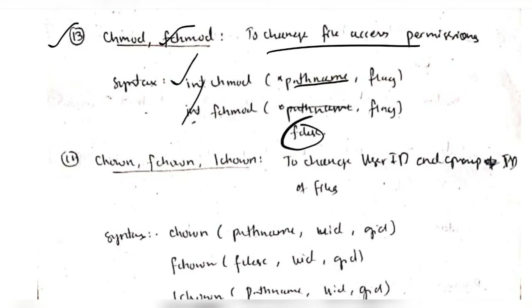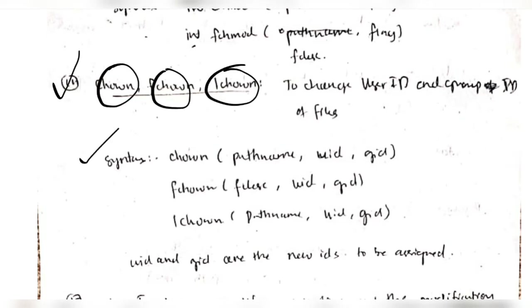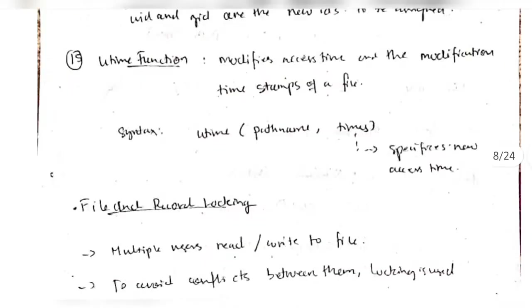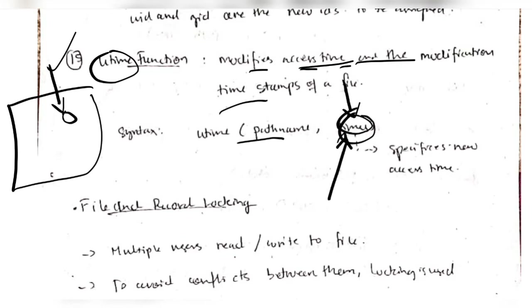In the same way we have the owner-changing functions 'chown', 'fchown', and 'lchown' - used for the same purpose but with different syntax for different situations. In the parameter list we specify the user ID and the group ID to change the owner. Finally we have the 'utime' function which modifies the access time - for example, I can use utime to change a file's recorded access time from Sunday morning to Saturday evening. The access time and modification time of the file can be changed using the path name and the target time.